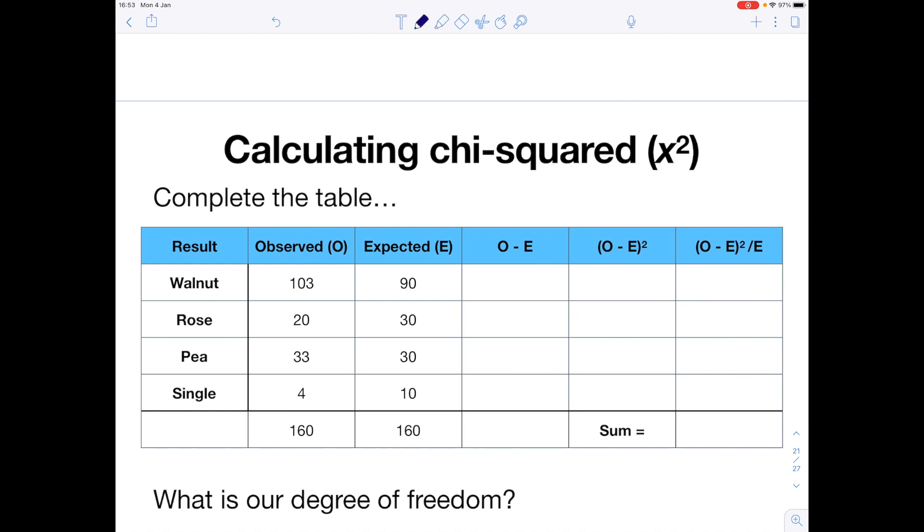So now we're going to complete the table. I've already laid out the observed results and the expected results. So now we just need to do O minus E. So 103 minus 90 is 13. 13 squared is 169. 169 divided by 90 is 1.88. 20 minus 30 is minus 10. Minus 10 squared is 100. 100 divided by 30 is 3.33. 33 minus 30 is 3. 3 squared is 9. 9 divided by 30 is 0.3. 4 minus 10 is minus 6. Minus 6 squared is 36. 36 divided by 10 is 3.6. Now we need to sum them. So 1.88 plus 3.33 plus 0.3 plus 3.6 gives us a sum total of 9.11.